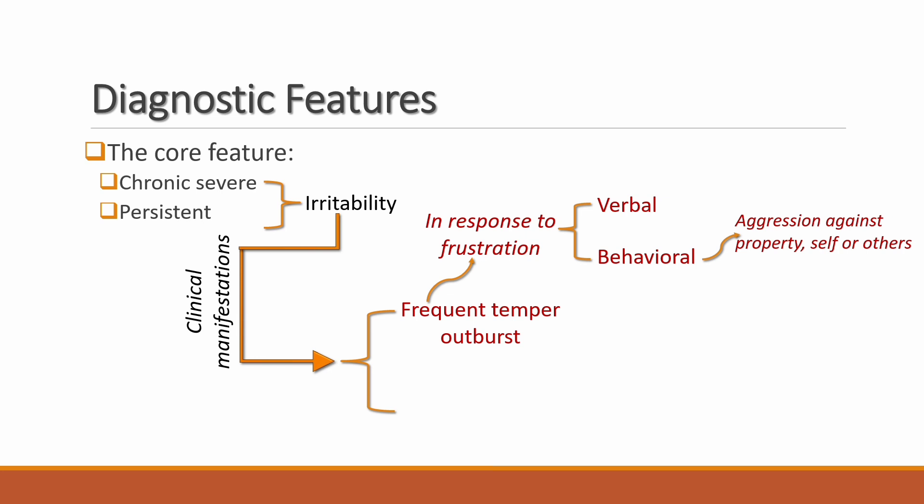These outbursts must satisfy criteria B, C, E, and F — meaning they occur on average three or more times per week, must be present for 12 months or more, must be noticeable in at least two settings among home, school, and peers, and must be developmentally inappropriate.